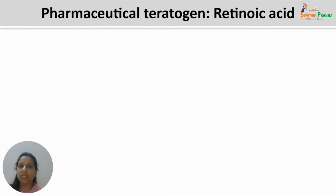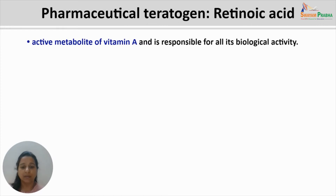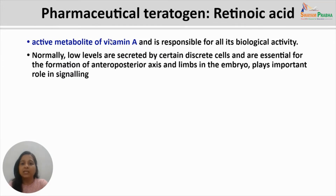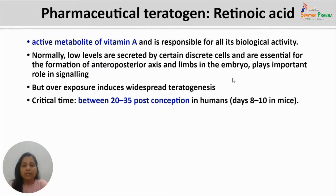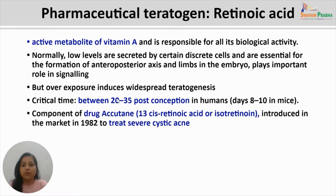We are done with one pharmaceutical teratogen, Thalidomide. The second pharmaceutical teratogen is Retinoic Acid. Retinoic Acid is an active metabolite of Vitamin A and is responsible for all the biological activities that Vitamin A has inside the human body. Normally, low levels of Retinoic Acid are secreted by certain discrete cells, and it is essential for the formation of the anterior-posterior axis and limbs in the embryo. But an overexposure of Retinoic Acid induces widespread developmental defects.